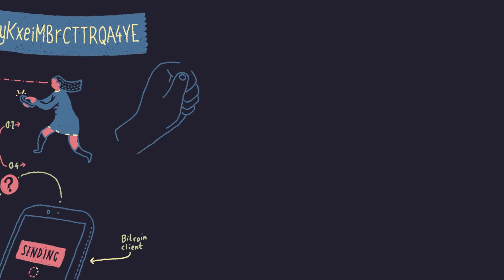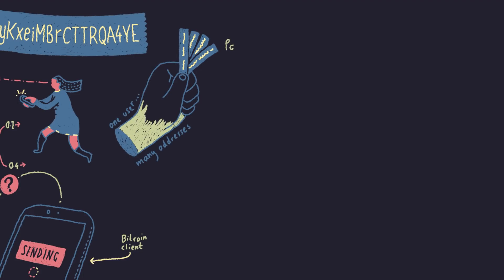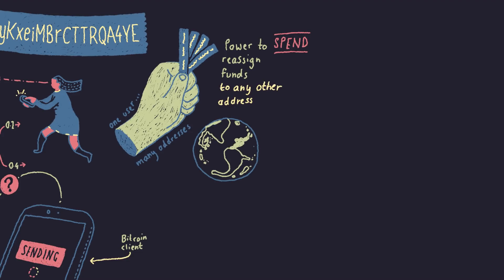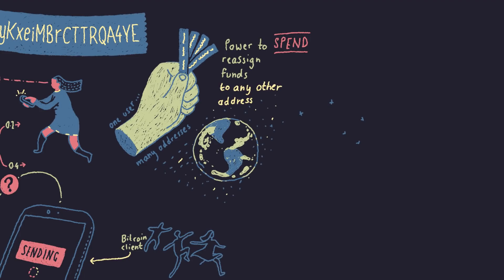We know that each bitcoin user has many addresses. What this really means is that the user has the power to reassign the funds at those addresses to any other valid bitcoin address — in other words, they have the power to spend those funds. Bitcoin addresses are designed to be public; people share them with others to request payment. Knowing a bitcoin address allows you to send funds to it, but it doesn't allow you to send funds from that address.